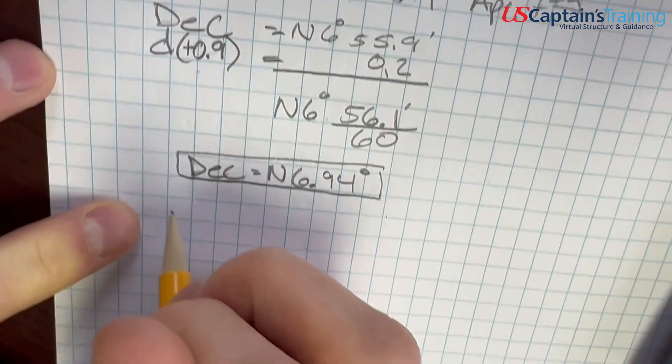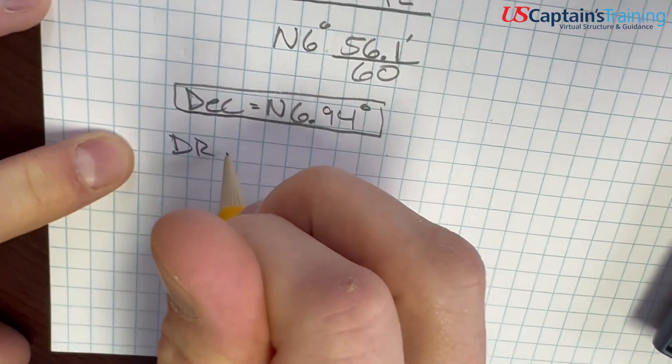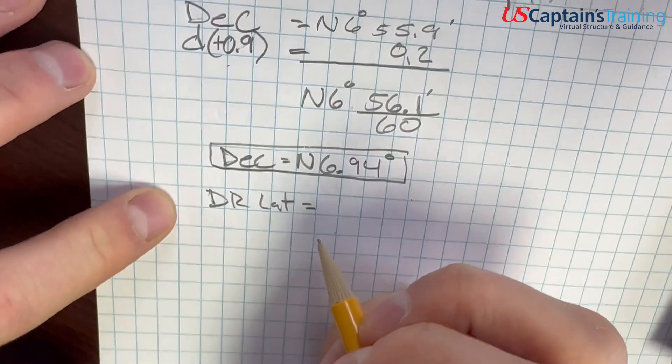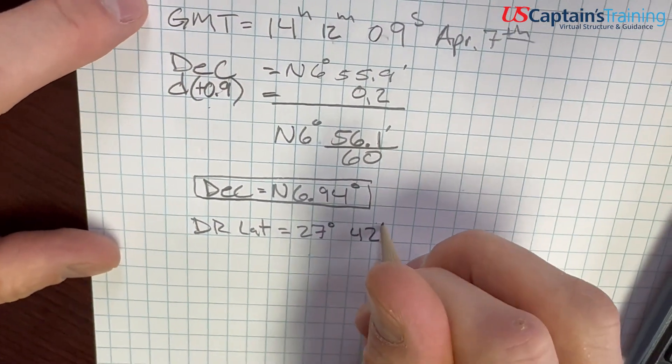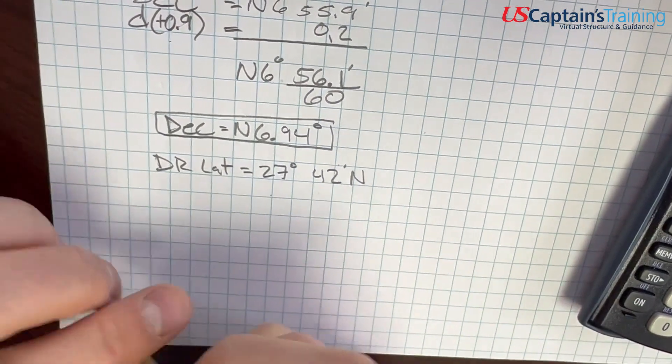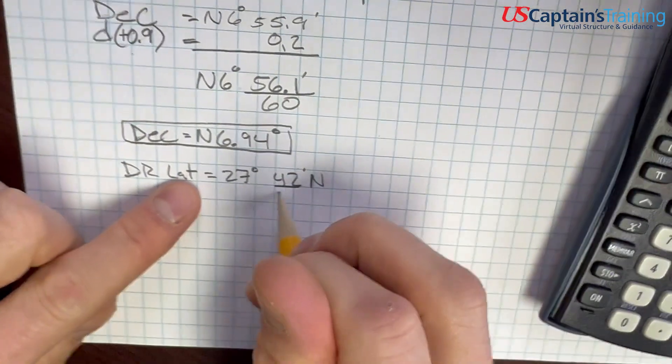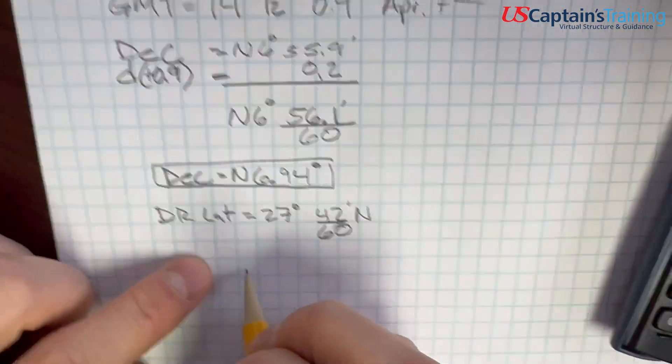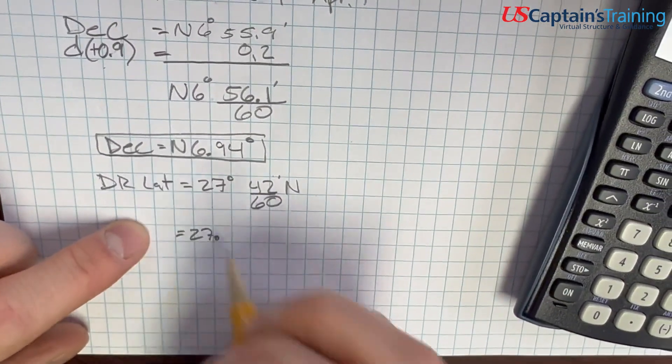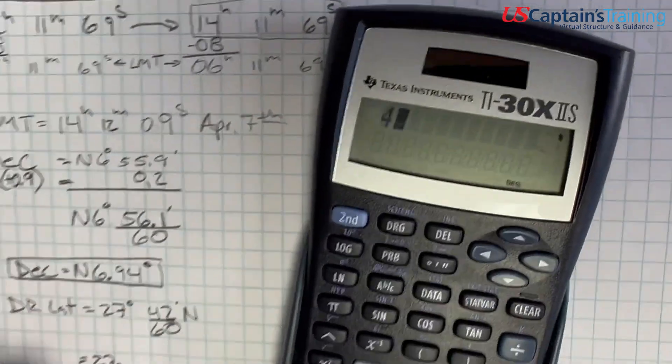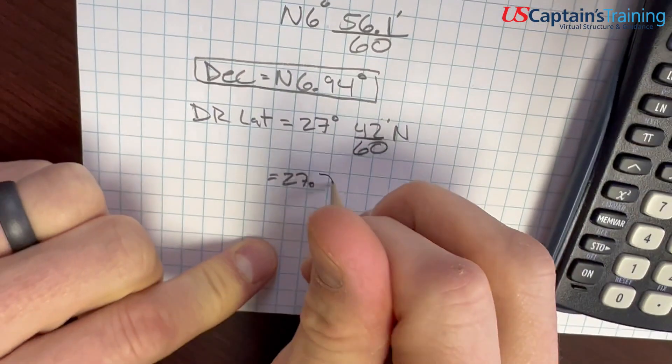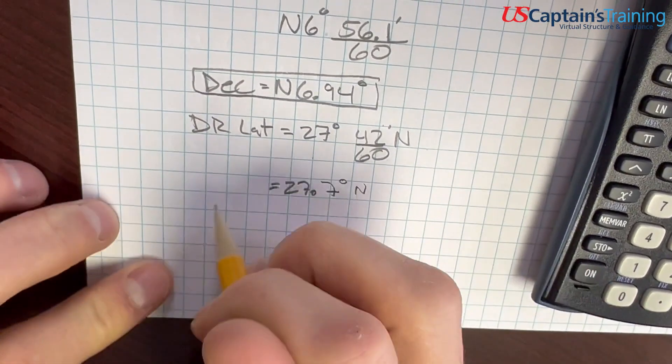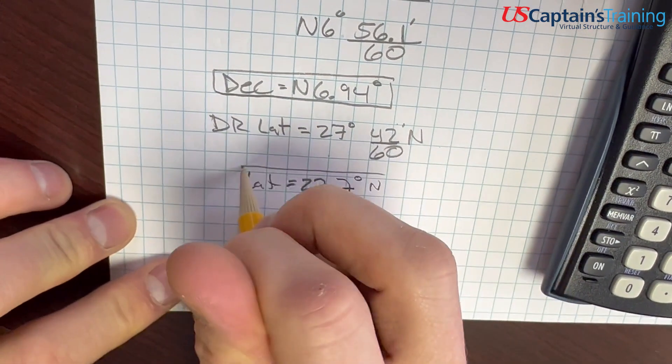And now we need to find the latitude. So DR is equal to 27 degrees 42 minutes north. And we need to again get this into degrees, divided by 60. So we're going to get 27 point what? 42 divided by 60 equals 0.7, so 27.7 degrees north. This is our latitude.